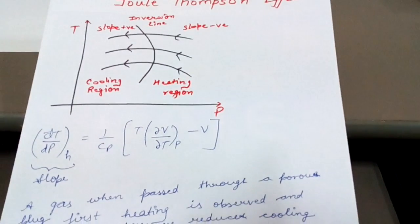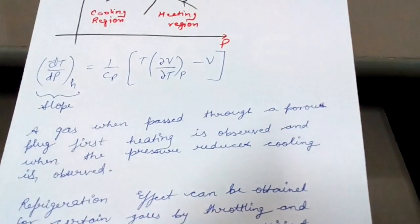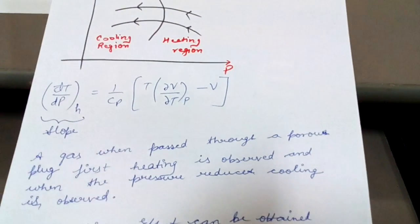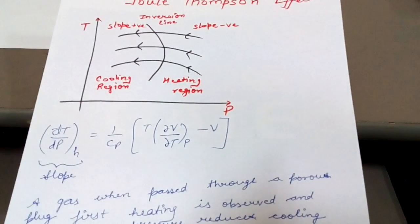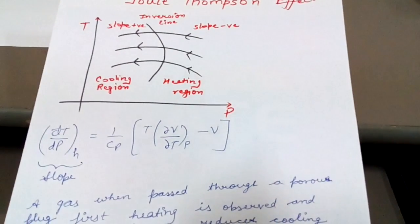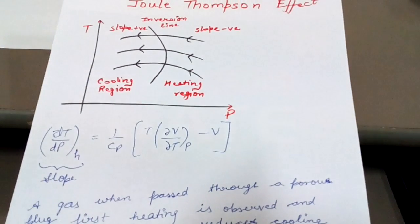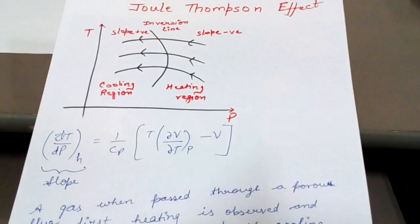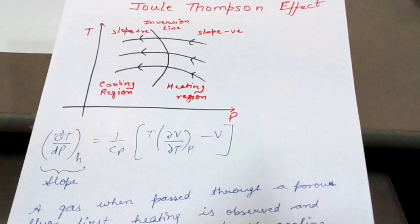What is Joule-Thompson effect? When a gas is passed through a porous plug, first heating is observed. When any gas is allowed to pass through that plug from a region of higher pressure to a region of lower pressure, then first heating is observed.